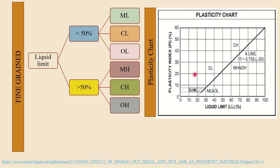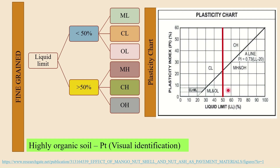To classify low or high plasticity condition, draw a line along the liquid limit at 50. If your liquid limit is less than 50%, that indicates fine-grained soil of low plasticity, and if your soil falls above a liquid limit of 50, then it indicates clay or silt of high plasticity. For organic type of soil, you can easily identify them through their dark color and also by the odor coming from them. You can also identify dead and decaying matter in highly organic soil.